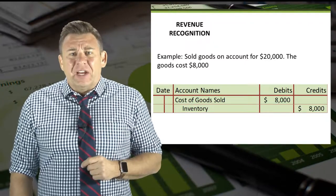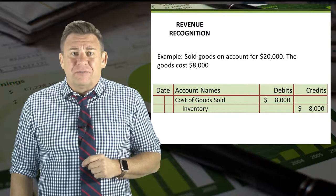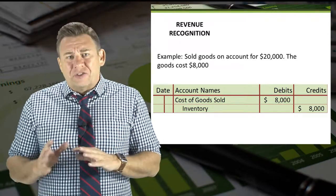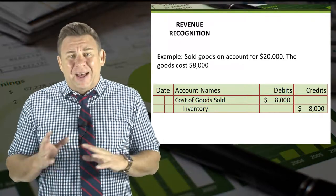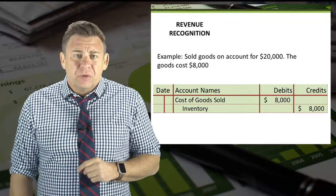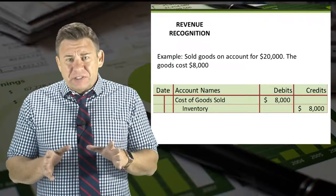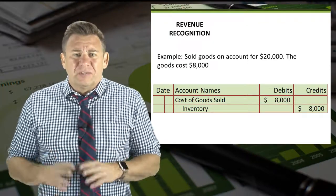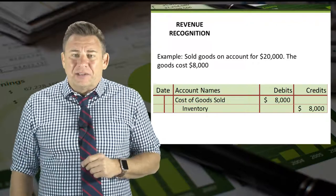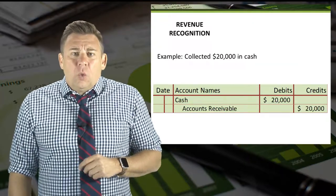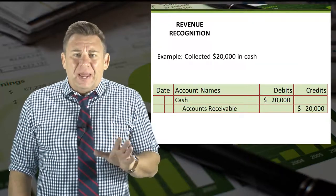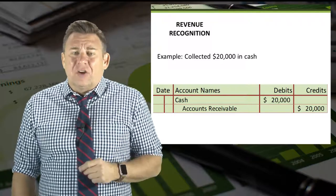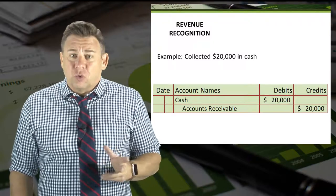If you need more understanding on this type of transaction, I would encourage you to watch the videos on buying and selling inventory. For the purposes of this video, we want to focus on the revenue component, not the cost component. When a customer pays us, we debit cash and credit accounts receivable for $20,000.